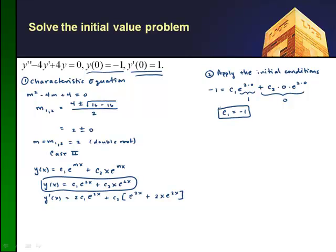Okay, so if I apply the second condition here, I have y prime of 0 equals 1. I get 1 equals, and I go into my y prime function. All right, and I get 1 equals 2c1 e to the 2 times 0, e to the 0, plus c2, and then in parentheses I have e to the 0 plus 2 times 0 times e to the 0, which I know will still equal 0. This will give me 1.